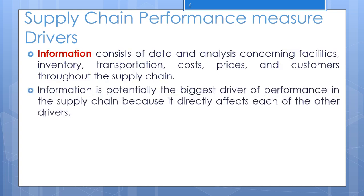The next supply chain performance measuring driver is information. Let us discuss the role that information plays in the supply chain. Information affects every part of the supply chain; its impact is easy to underestimate as it affects the supply chain in many different ways. Information serves as the connection between various stages of the supply chain, allowing them to coordinate and maximize total supply chain profitability.